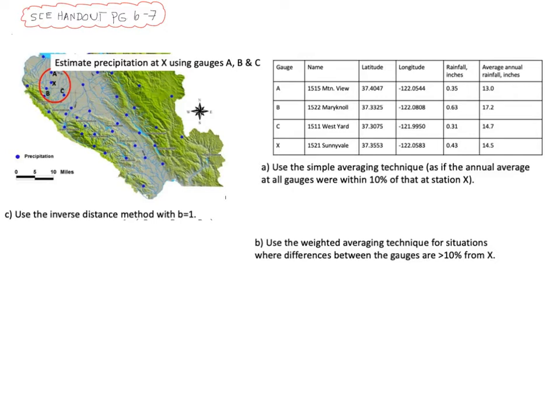So we're going to get started by using the simple averaging technique. And so the general form of that equation is just to take all of the nearby rain gauges and find their average. So we can write the general form of that equation. We're going to find the precipitation at point X is equal to the precipitation at A plus the precipitation at B plus the precipitation at C divided by 3.